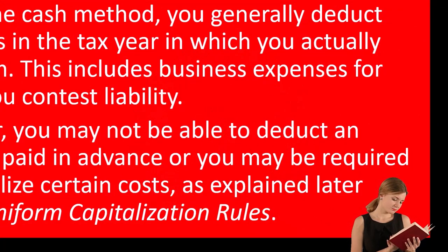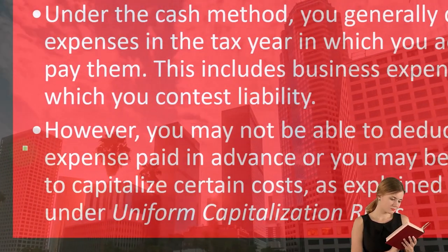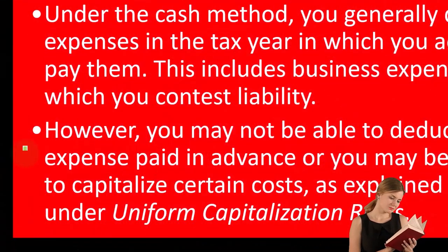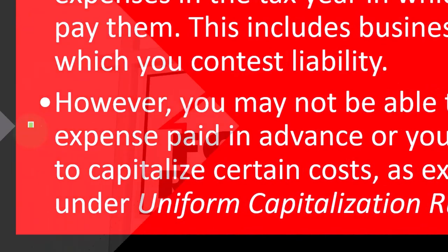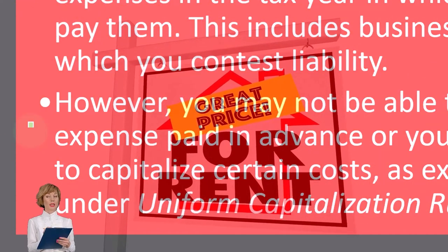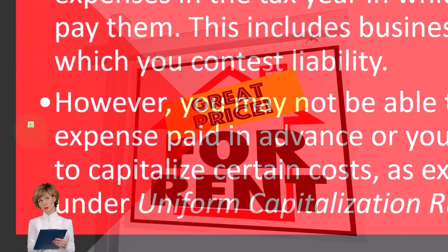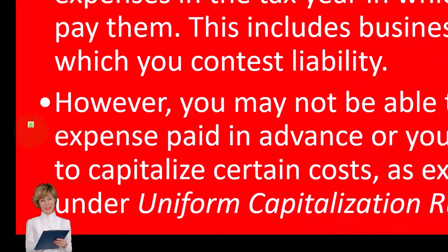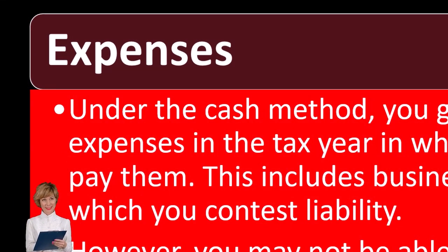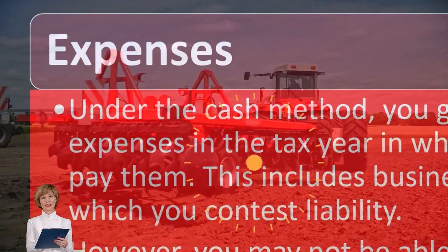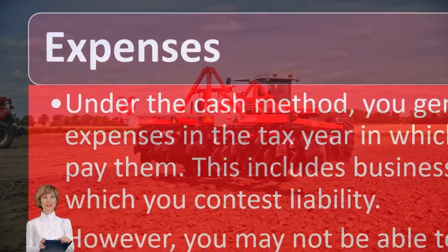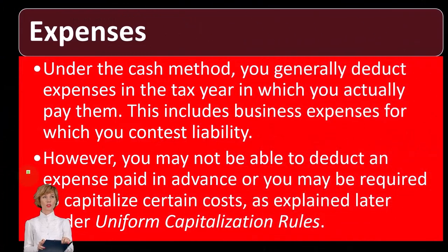Otherwise, if you deducted a $100,000 building in year one even though you're going to use it for 30 years, it's such an extreme example of a prepayment situation — basically the same concept as prepaying rent. If you prepay the rent for five years in advance, you get the deduction when you pay it. Similarly, if you have a piece of equipment you're going to use for 10 years and you pay for it and get the deduction all in year one, it's such a giant deviation — a giant difference between the consumption time and the payment time.